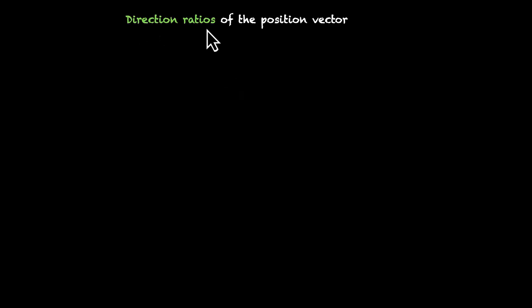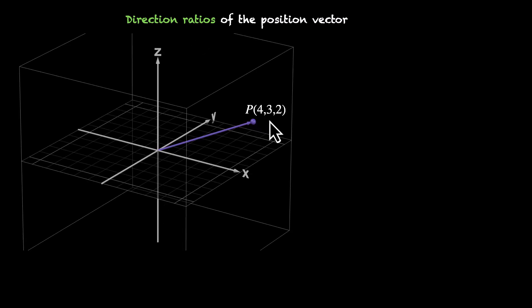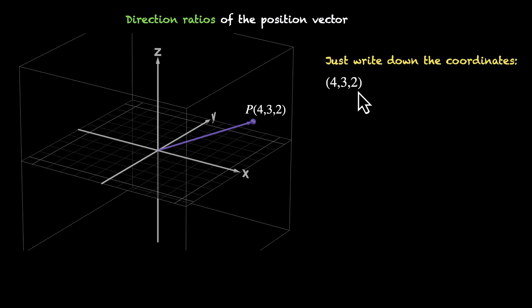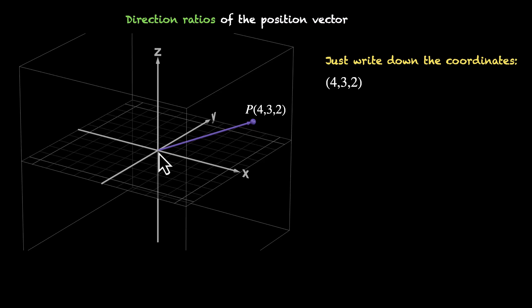Now let's talk about direction. We can do this in two ways. First, we have direction ratios. For this point P, direction ratios are just the coordinates of this point — that's it. This means if you're moving from the origin towards this point, that's the direction we are after. This is the direction of this position vector.